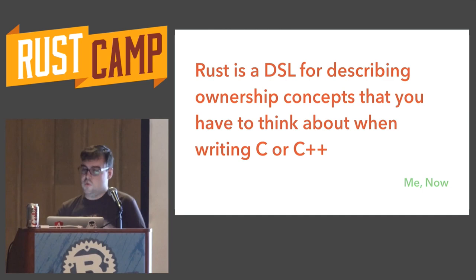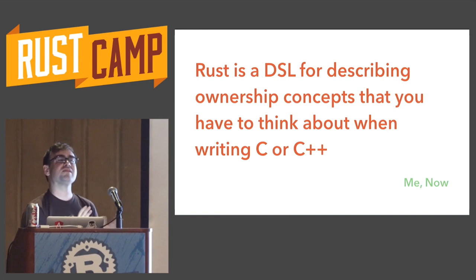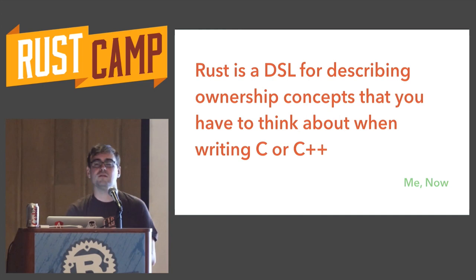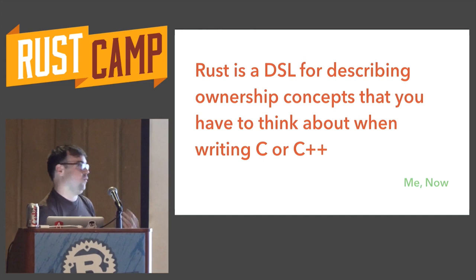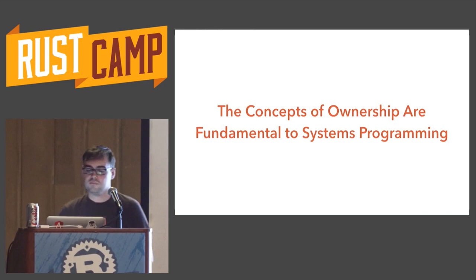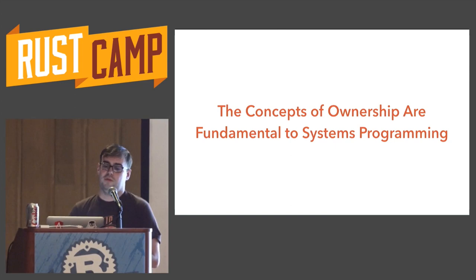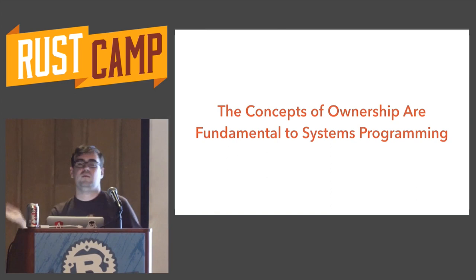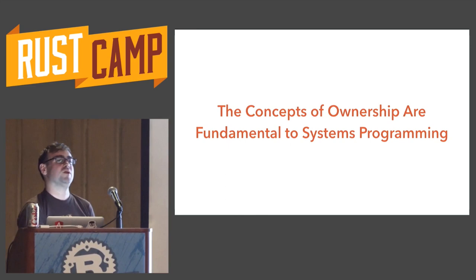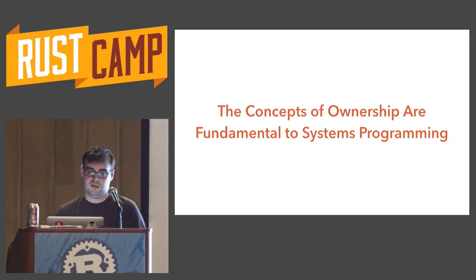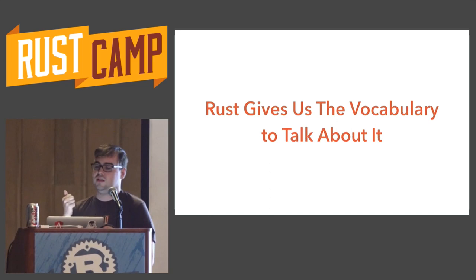One way I would say this is: Rust is just a DSL for describing ownership concepts that you already have to think about when you're writing C or C++ code. When you're writing C code, all those questions still apply — we just have to communicate them in ad hoc ways, like in a dynamic language where you communicate things through documentation. What Rust gives us is a way to communicate these things directly and tersely. The concepts of ownership are really fundamental — this is why a lot of people say when they go back to write C++ or even Ruby code after writing Rust, they think a lot clearer. The concepts Rust makes you think about are describing things that exist in C or C++; Rust just gives us vocabulary and makes the contracts terse and enforceable.